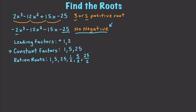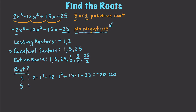Let's go and test them. Is 1 a root? We can say 2 times 1 to the third minus 12 times 1 squared plus 15 times 1 minus 25, which equals negative 20. So that is not a root. Then we can go to 5: 2 times 5 to the third minus 12 times 5 squared plus 15 times 5 minus 25. That equals 0. So yes, 5 is a root.